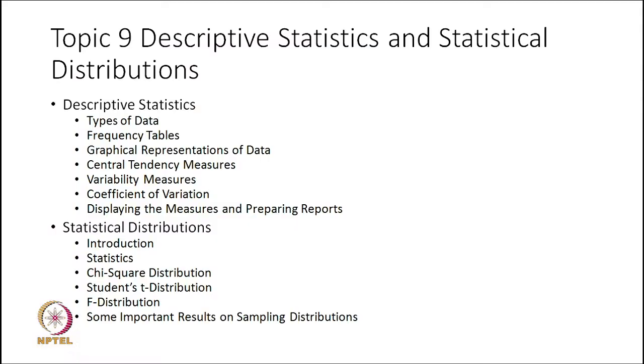Good morning everyone. This is Topic 9 in Introduction to Probability Theory and Statistics. In this topic, we have already discussed descriptive statistics, starting from types of data, graphical representation of data, and central tendency measures — mean, median, mode — and variability measures such as sample variance, sample standard deviation, coefficient of variation, skewness, and kurtosis, and how to make a summary report of data in the form of descriptive statistics. This we studied in the last lecture with one example.